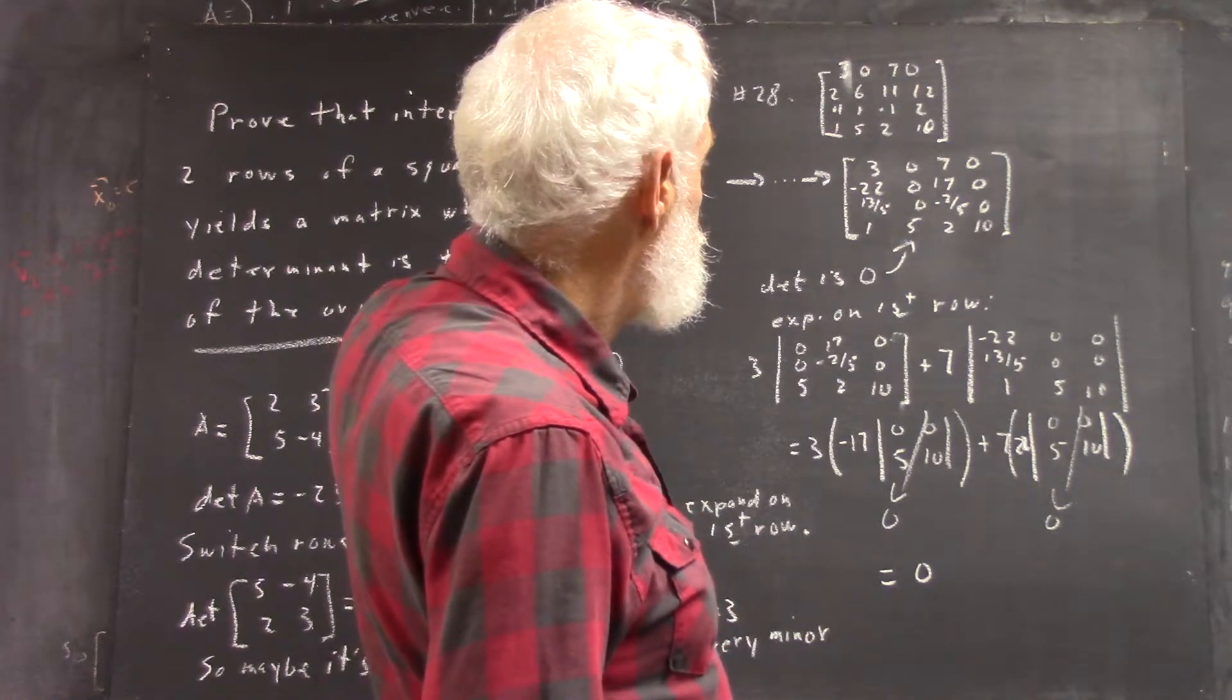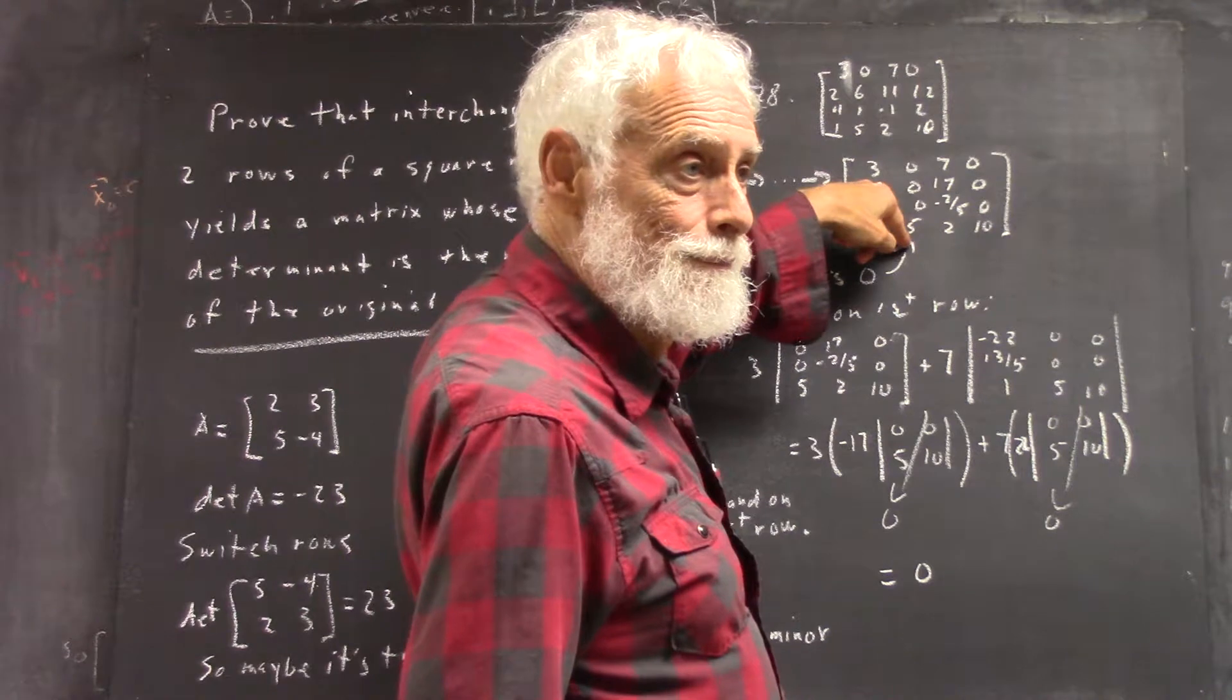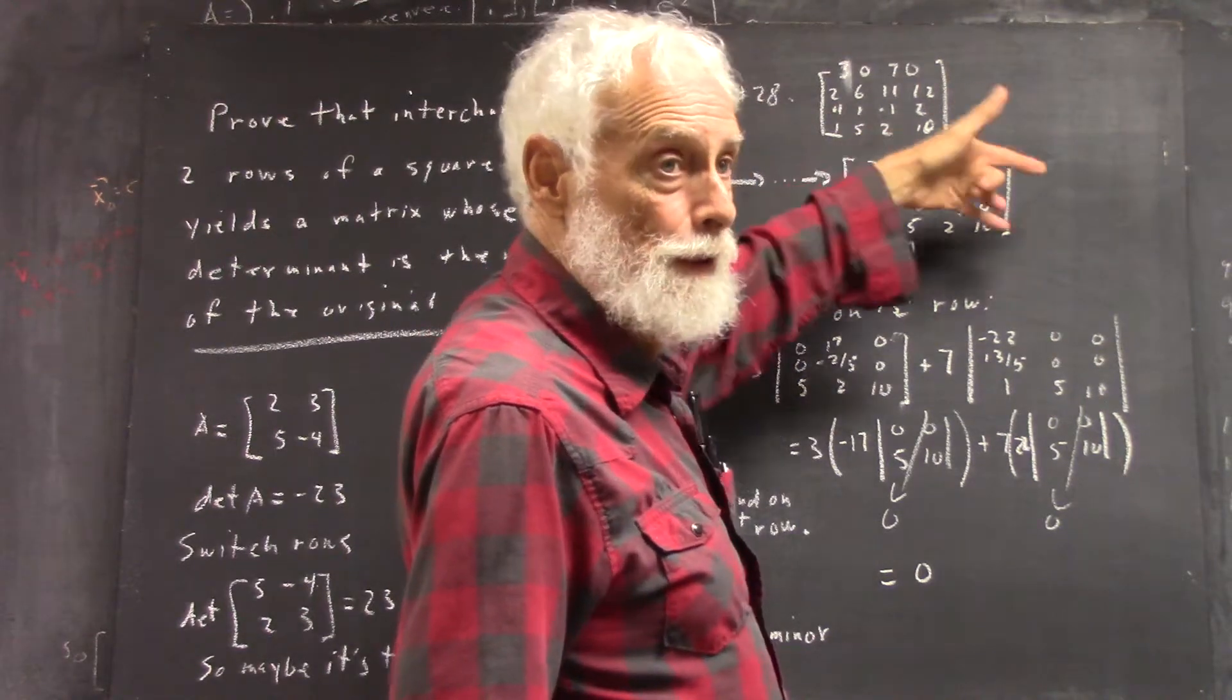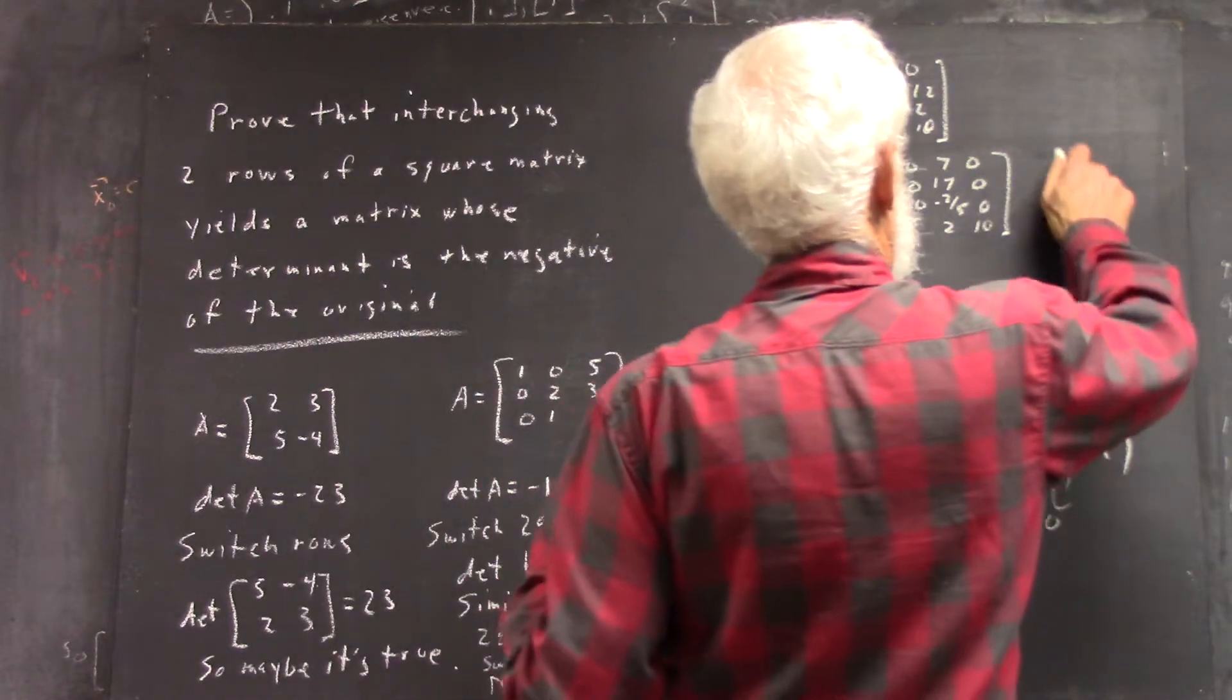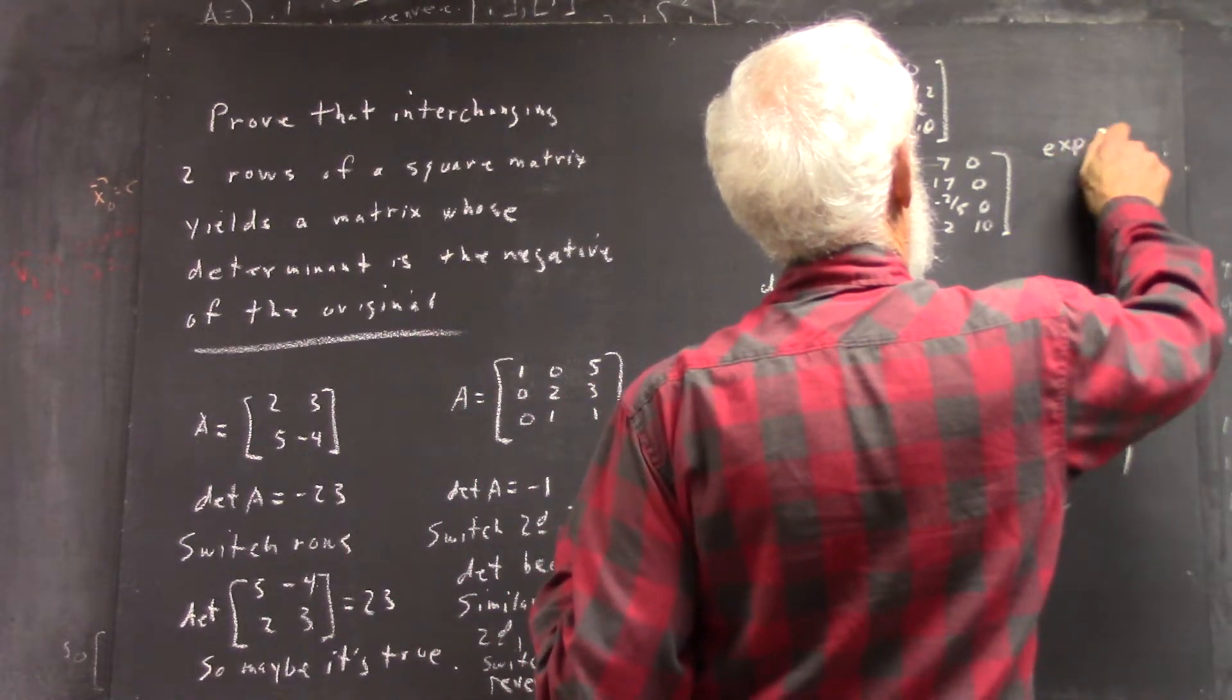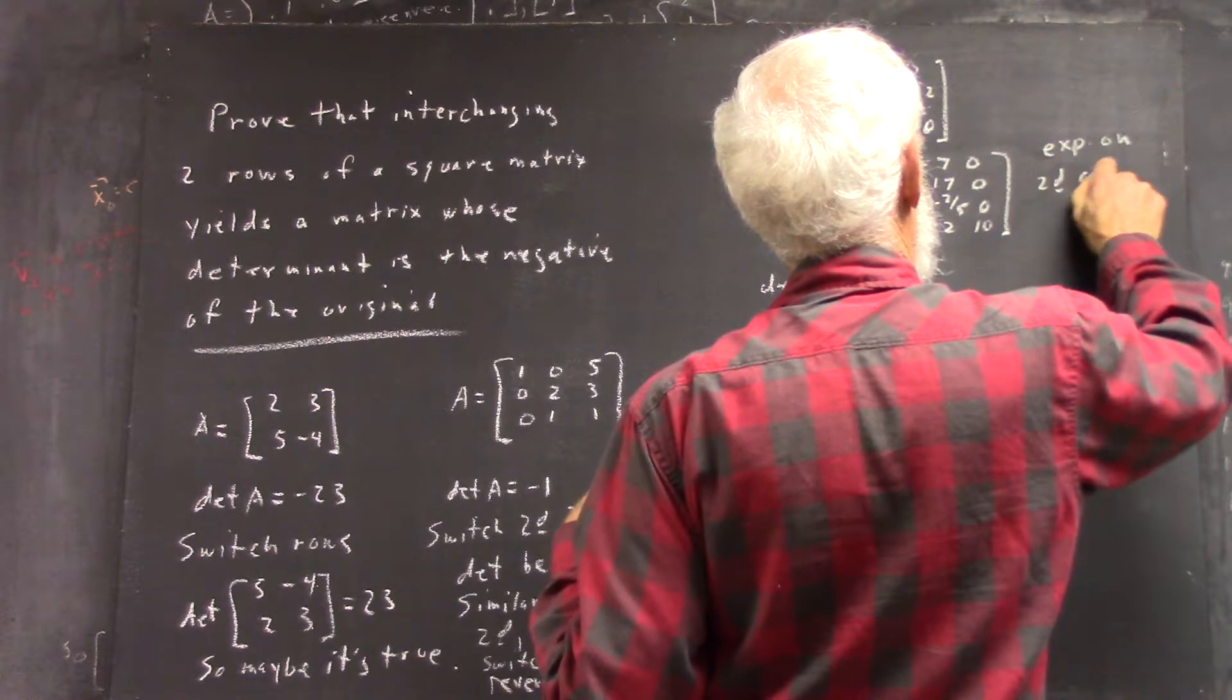So expanding on the first column, we immediately get a matrix that's got a row of zeros. Alternatively, let's expand on the second column.